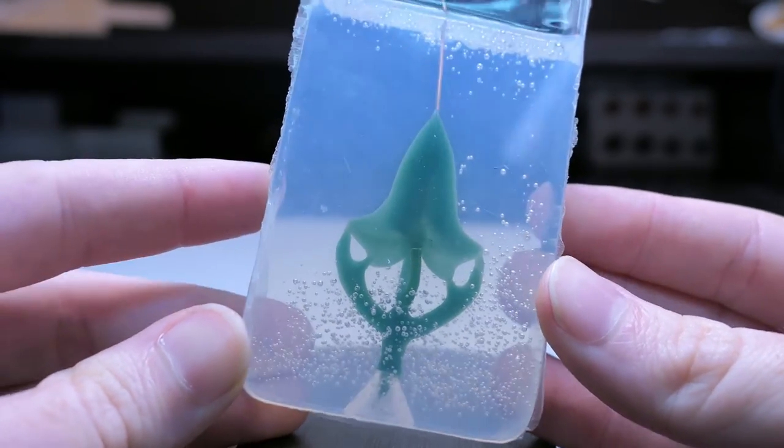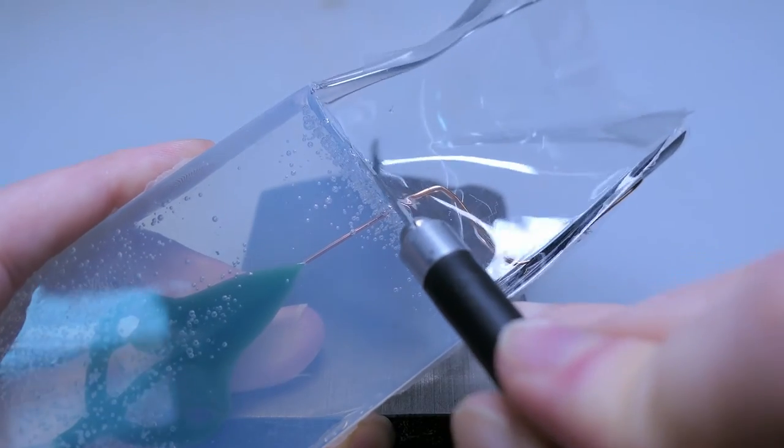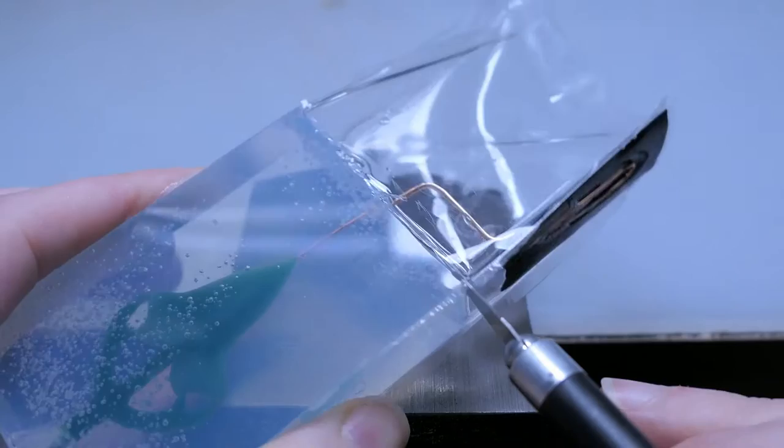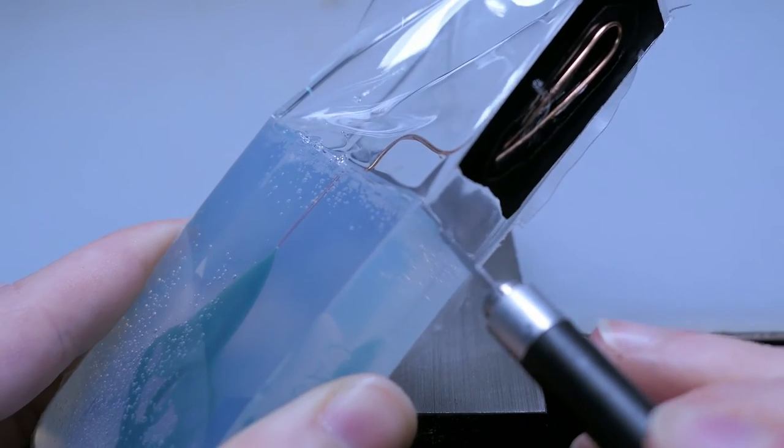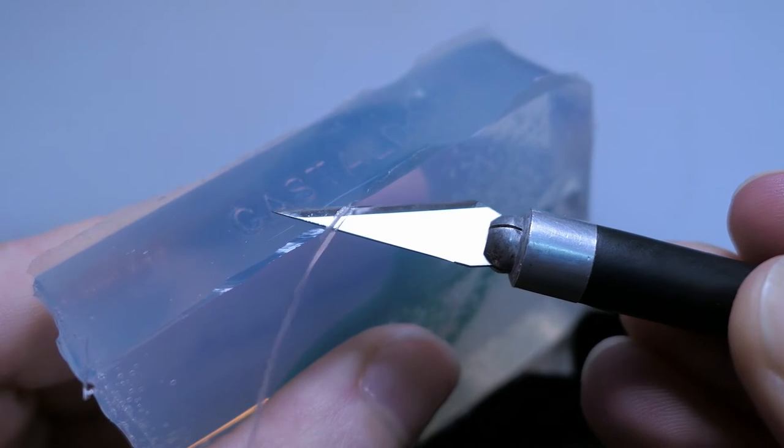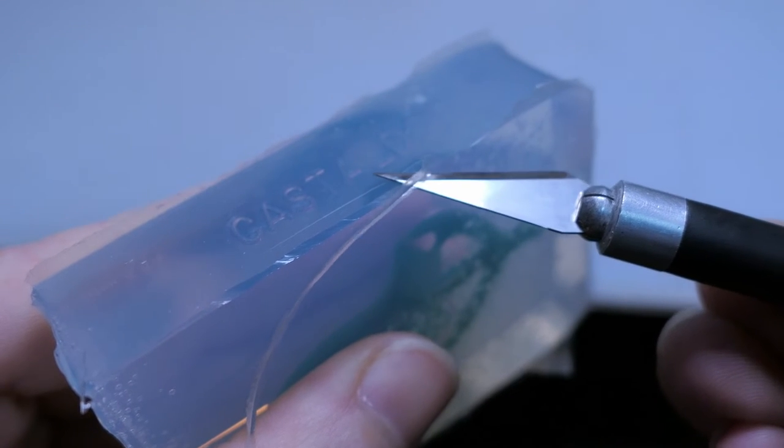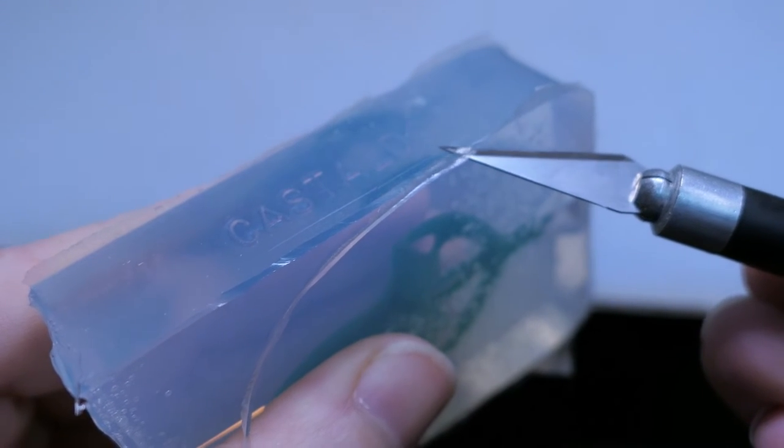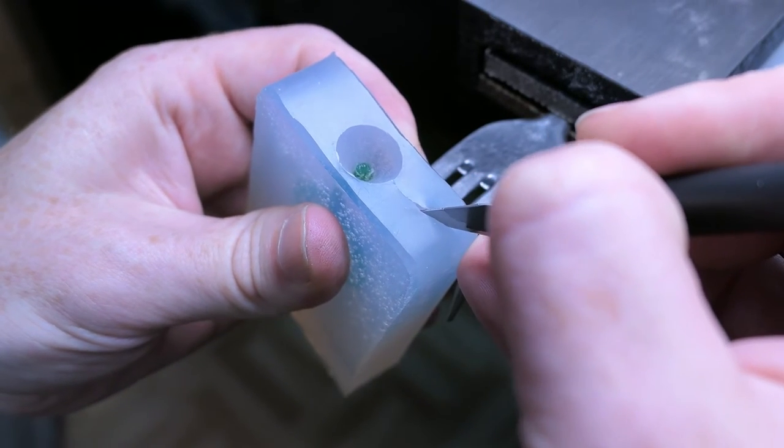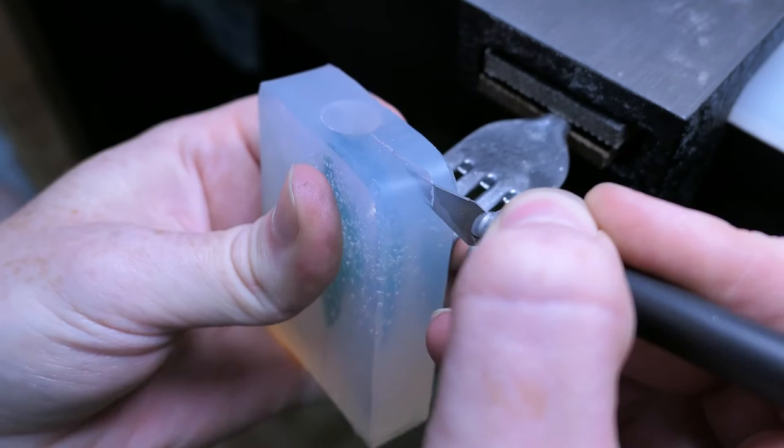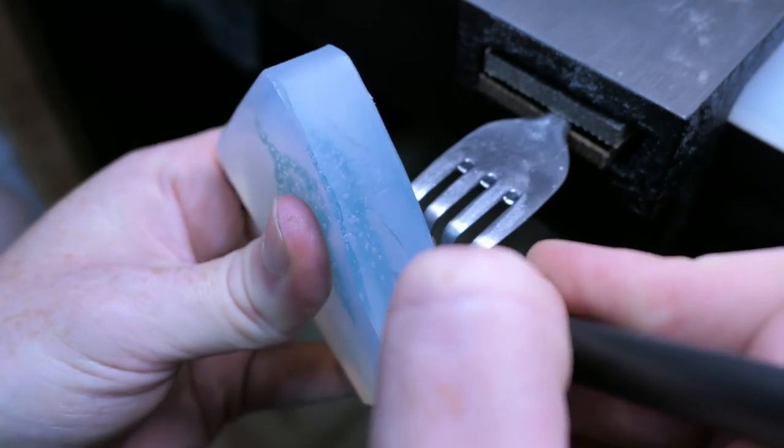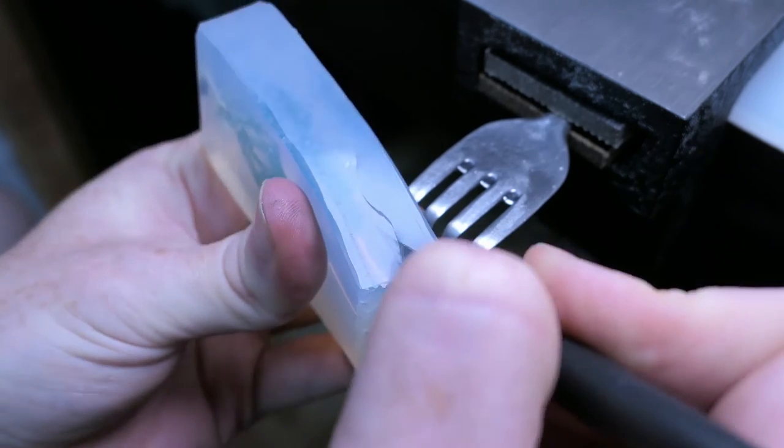Once the silicone is fully cured, I can start cutting away the flashing using an X-Acto knife just to clean up the mold. I'm going to start cutting a wavy pattern around the entire mold to act as a key and help align the two halves of the mold later on.